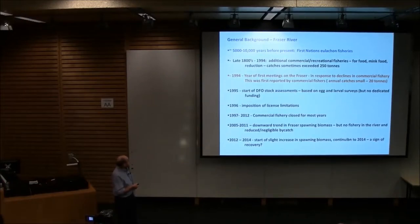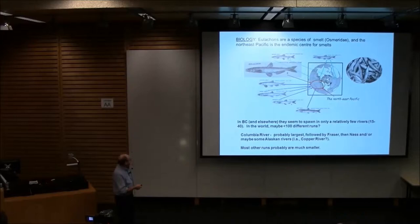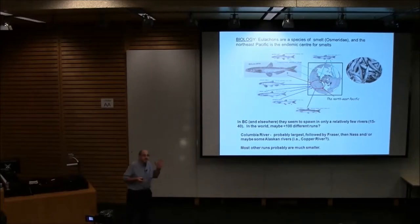If you look at the whole coast of North America, the biggest population is in the Columbia, the second is in the Fraser. Columbia is probably about ten times bigger. In 1995, we started doing assessments of eulachons in the Fraser based on egg and larval surveys. We started catch limitation in 1996, and since that time, basically the fishery's been closed. There seems to be a recovery, maybe a little bit of one.